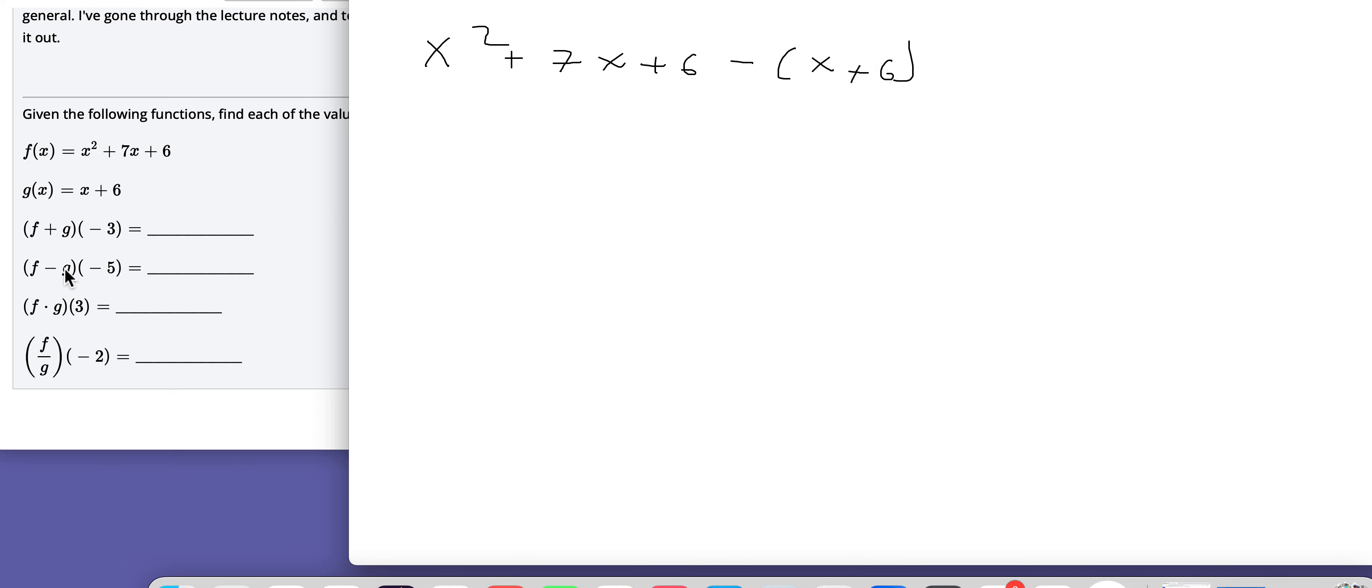So I could subtract these two functions first and then evaluate that at negative 5. Or I could plug negative 5 in first and then subtract the results. And I'll get the same answer either way. So I'll just show this one both ways.